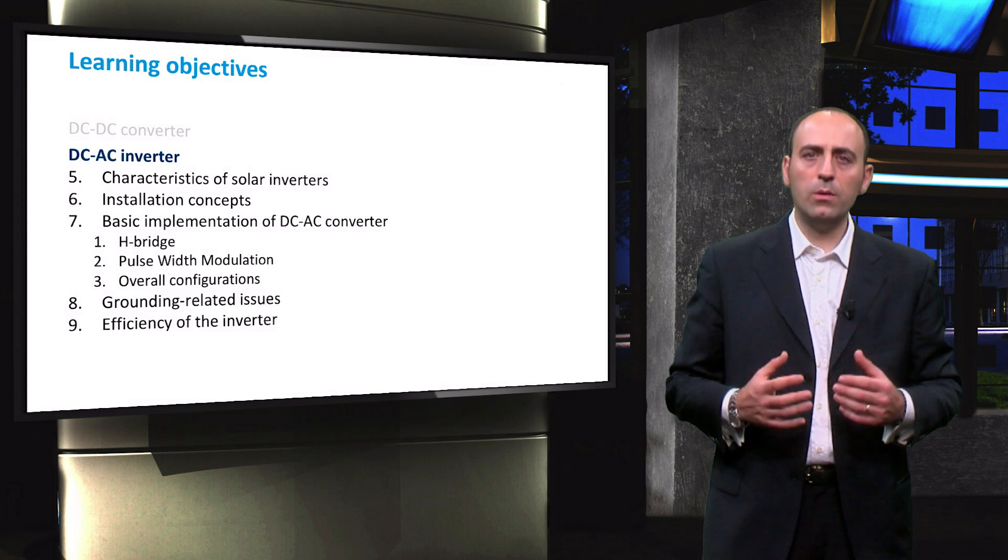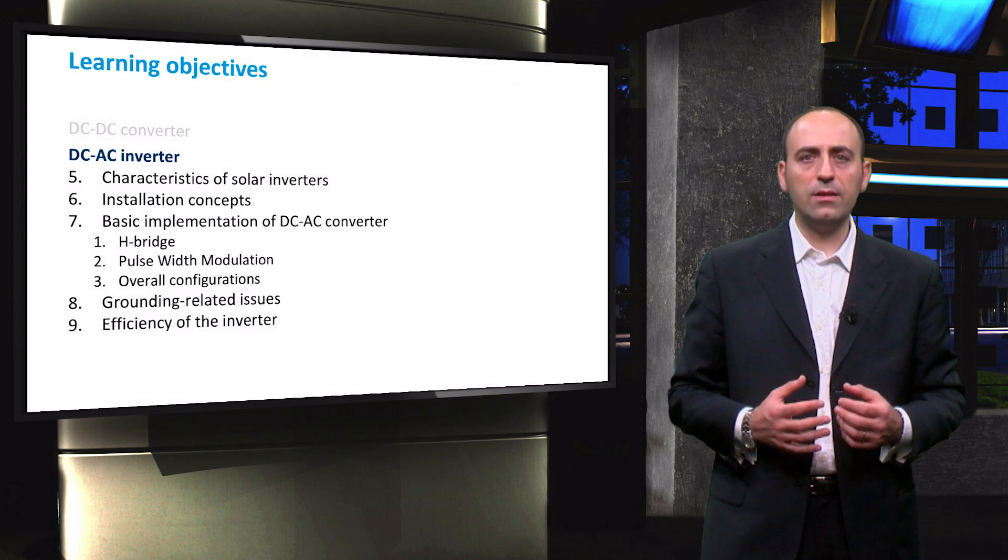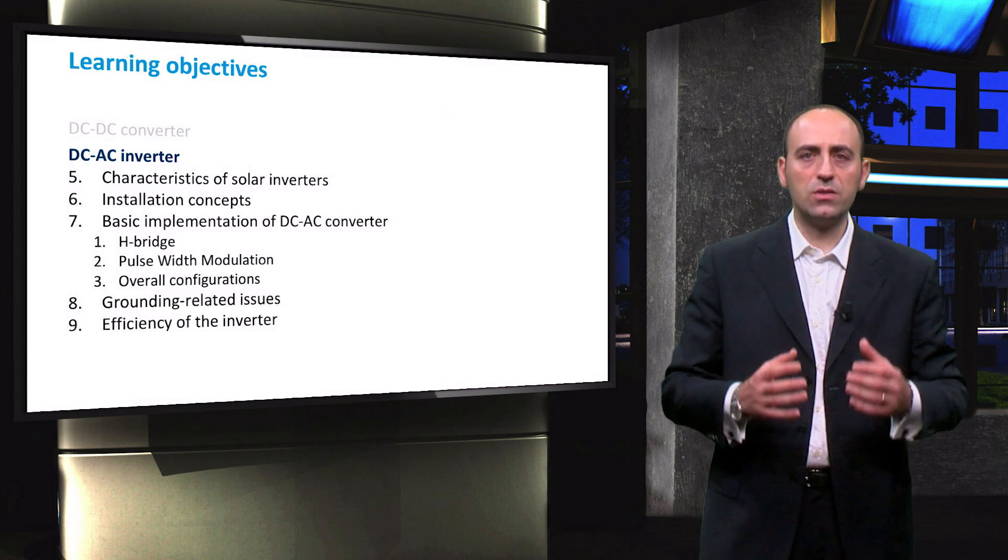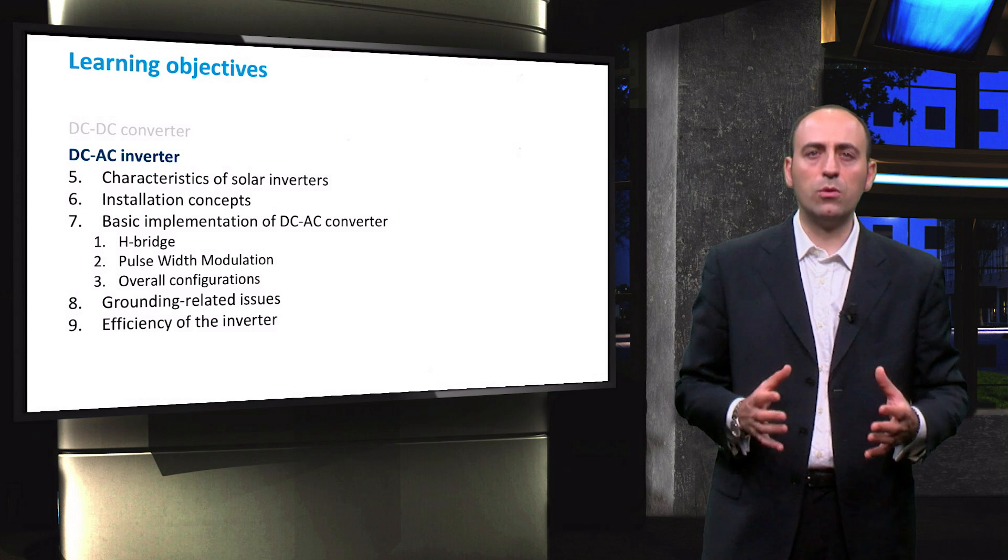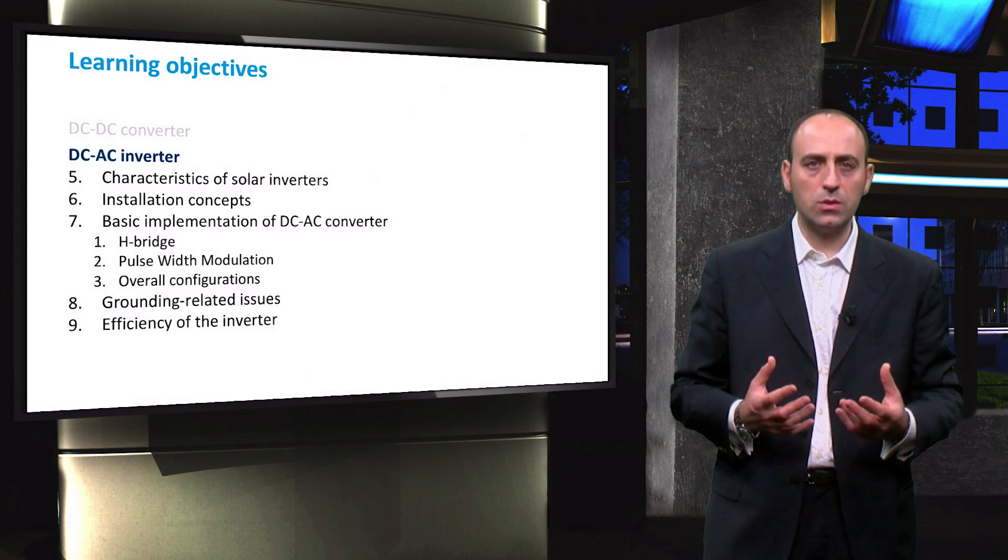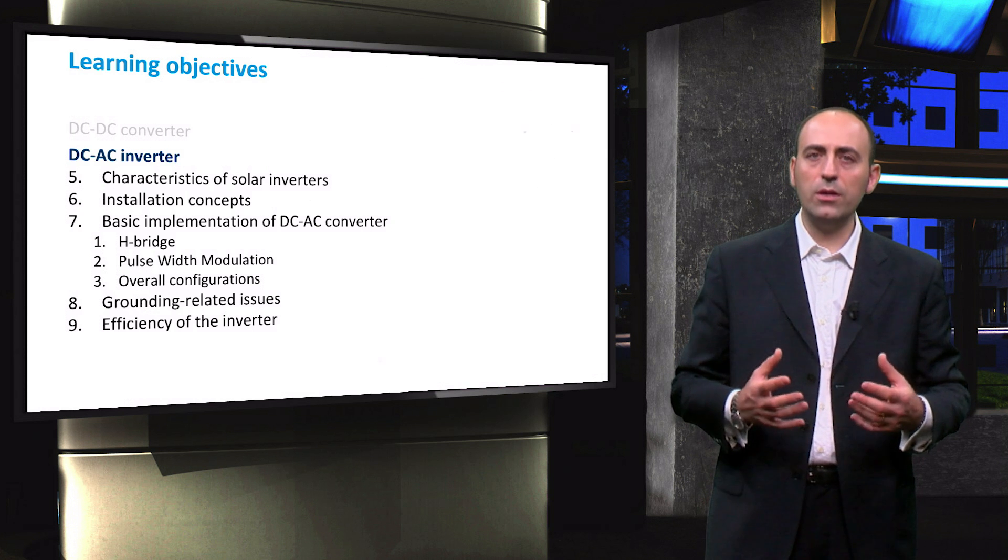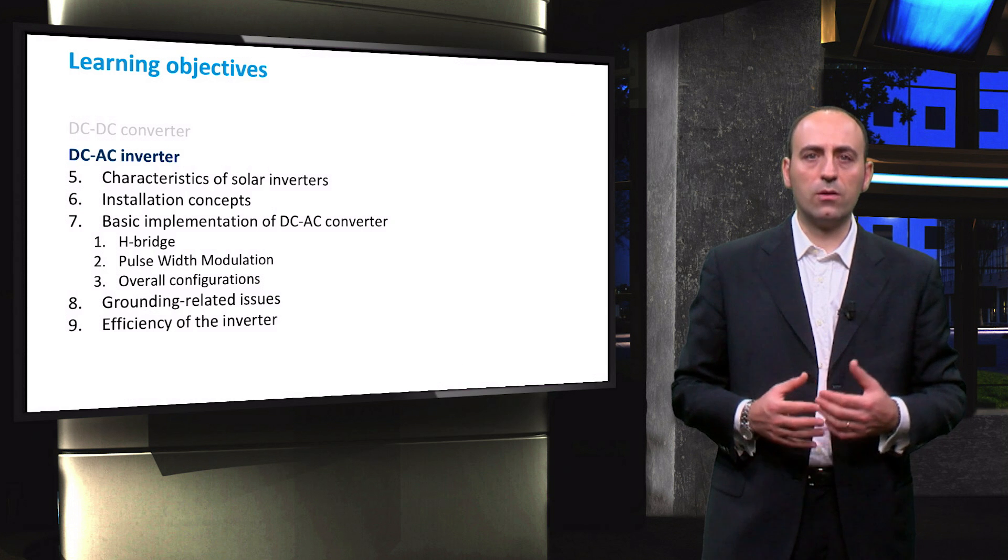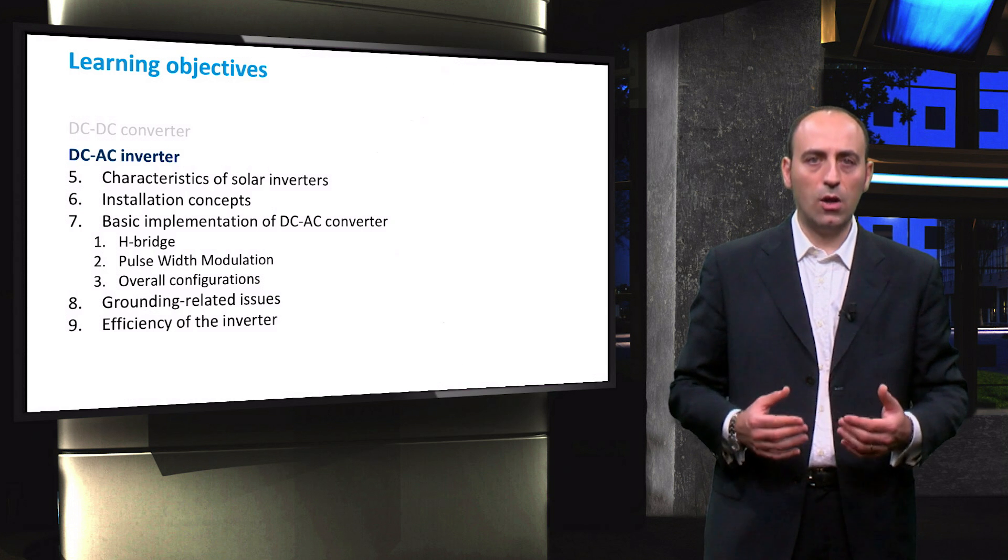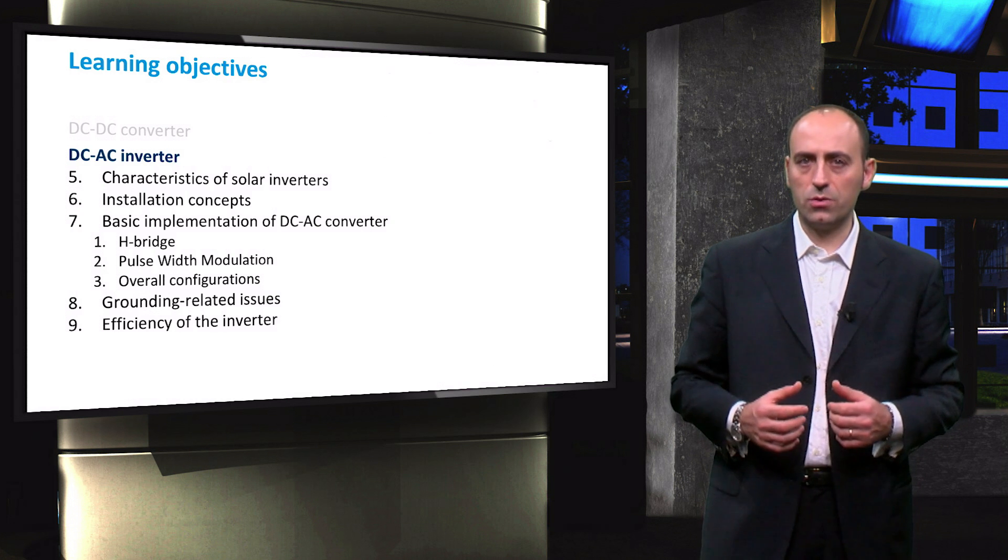In the next video, we are going to talk about installation concepts and the different topologies that you might encounter when you want to put together different PV panels in a PV system. Thirdly, we will see the basic implementation of a DC to AC conversion. In reality, every inverter brand has its own proprietary topology, so it is virtually impossible to go through all the different nuances of embodiment for a DC to AC inverter. However, in general, there are always an H-bridge along with a control algorithm to modulate the output signal. For this purpose, usually pulse-width modulation is used.